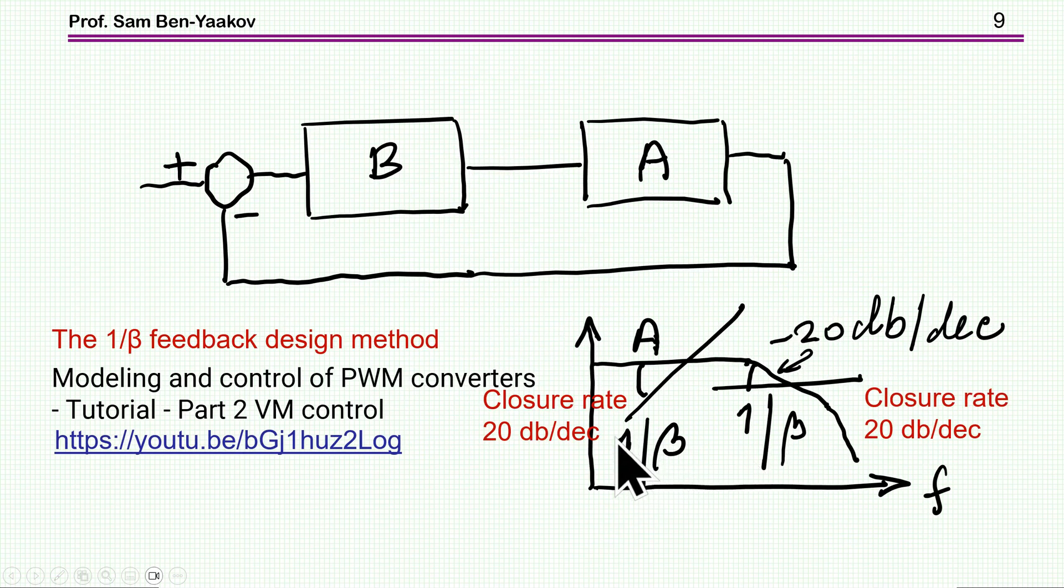Now, what does it mean proper? Again, in the 1 over beta approach, it's a very simple approach, very intuitive. In this approach, we plot the block that we know all about. In this case, it will be the BJT transfer function. We plot it here. This is the transfer function of the BJT. And then the other one that we are looking for, or the one that we have to design the compensation network for it, we plot 1 over the transfer function, 1 over beta. And, as shown in this video, we can now cross the A with the 1 over beta here or here.